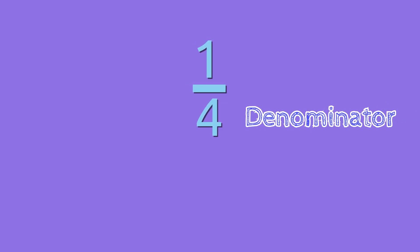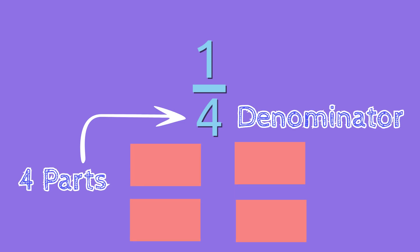A denominator tells us how many equal parts our whole has been partitioned or divided into. Take for example the fraction one-half and one-eighth.